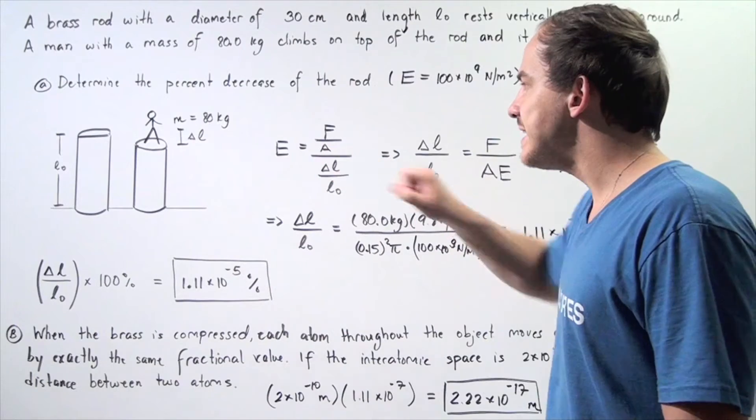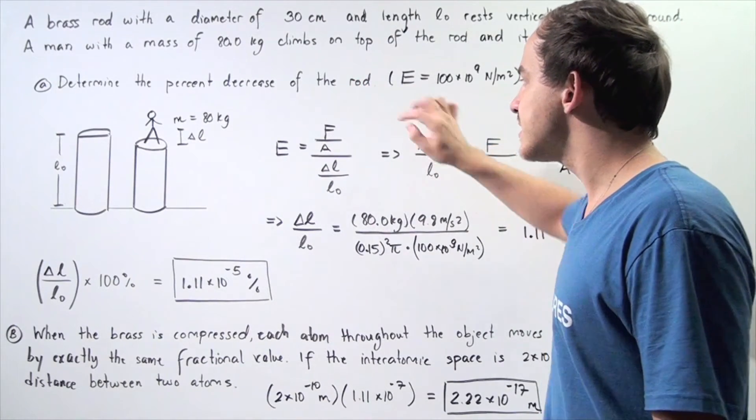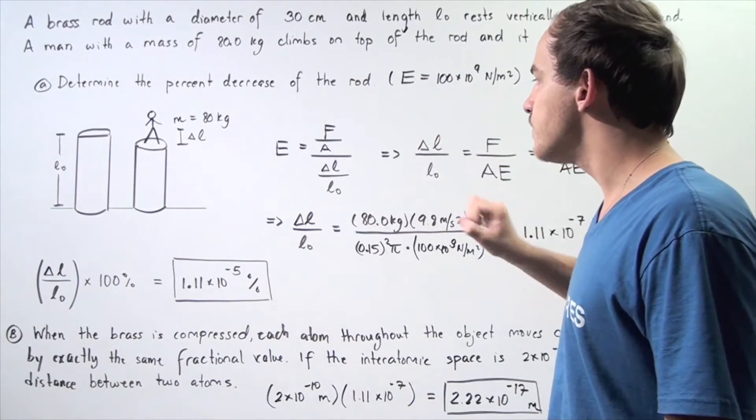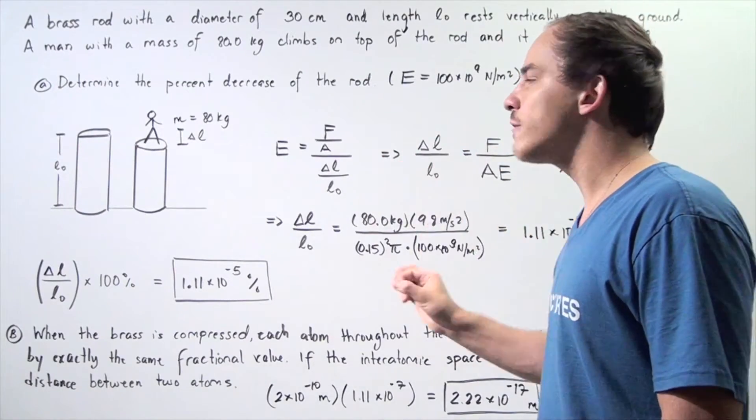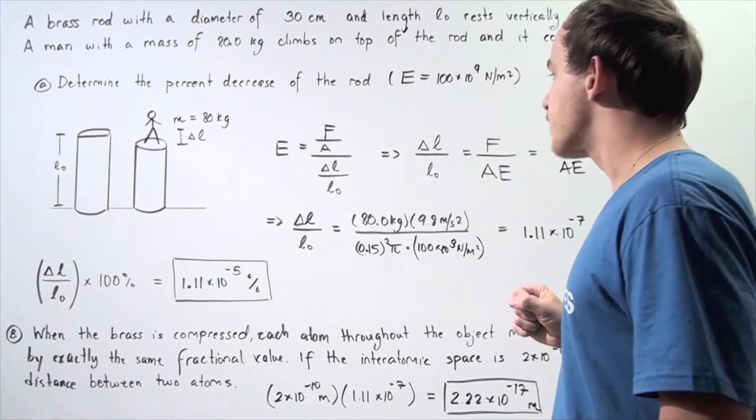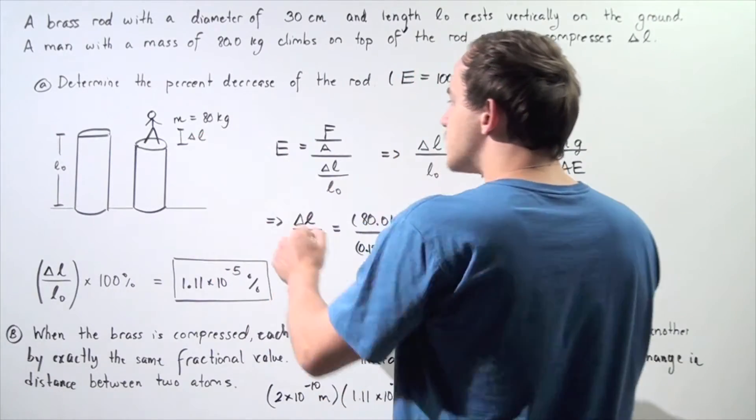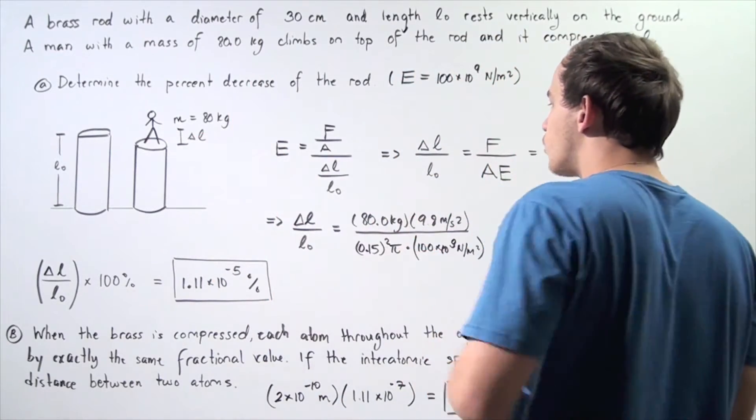Young's modulus, E, is equal to our stress over strain, where stress is force per unit area, and the strain is our fractional decrease. So, we are looking for this entire quantity. So, we basically take this quantity and bring it over to the left side, and take E, and bring it to the right side.